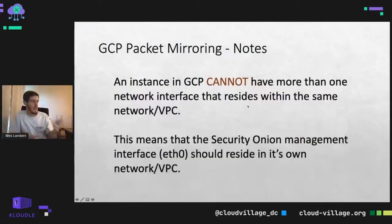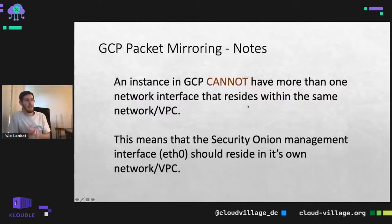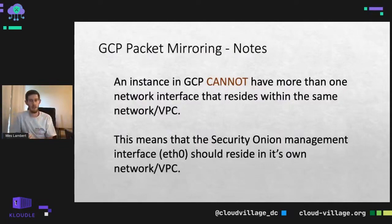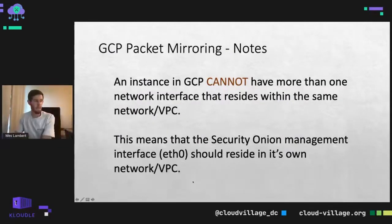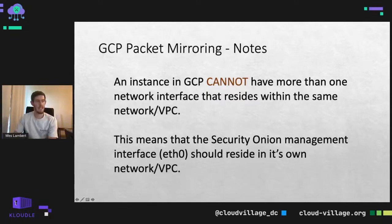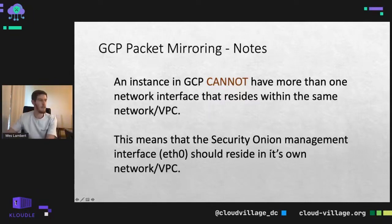An important note: in GCP you cannot have two interfaces in the same network on the same instance. So you would have one interface in this network performing the sniffing function, then another interface for the Security Onion box in a separate network — which is really best practice anyway. That's how GCP packet mirroring comes into play.